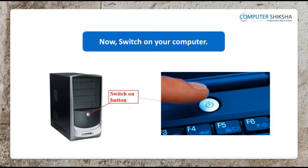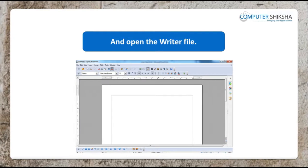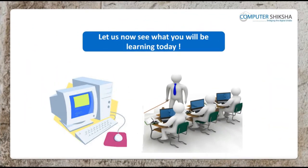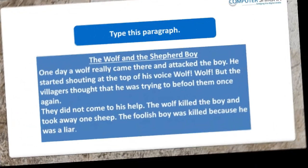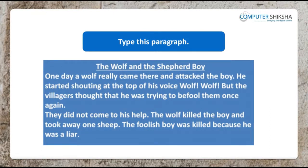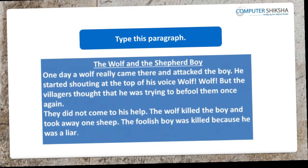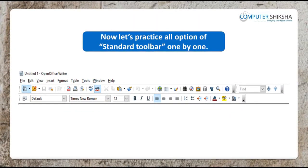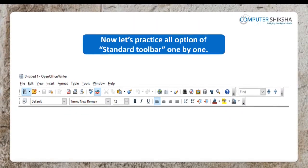Switch on your computer and open the Writer file using any of the methods taught to you. Let us now begin today's class. First of all, go ahead and type the paragraph being shown to you. Have you typed out the paragraph? Now apply any formatting on this paragraph. Let us now practice all the options of the Standard Toolbar one by one.